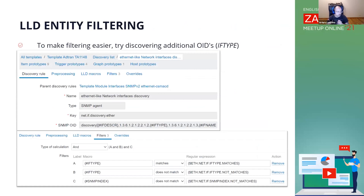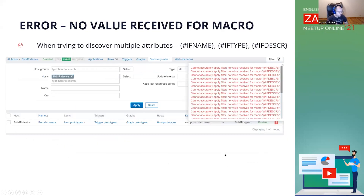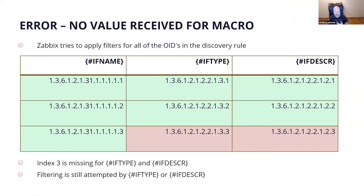Here we can see a set of common filters that are used. In case of SNMP discovery, we should use filtering to filter by specific entities — for example, by interface types, specific interface names, or even specific indexes if they cause problems. Another error I received after implementing filters was: 'Cannot accurately apply filter. No value received for macro if description.' Zabbix tries to apply filters on three macros — interface name, interface type, interface description. For interface name we discover three indexes: one, two, three. For interface type and interface description, we discover only one and two.